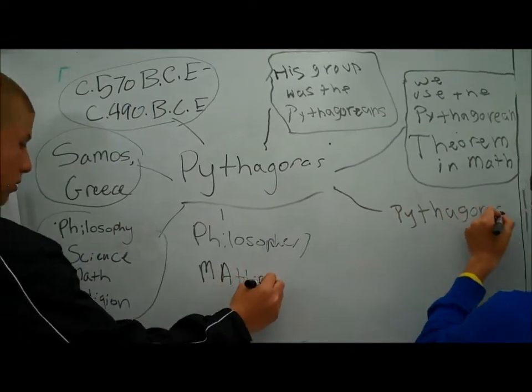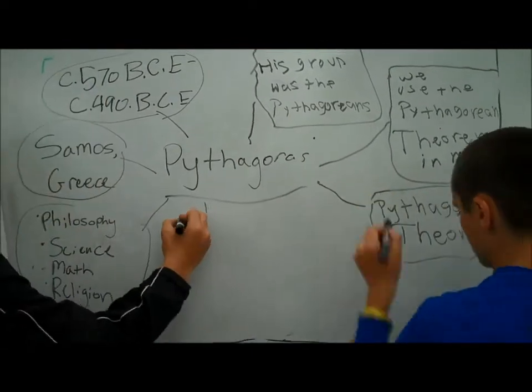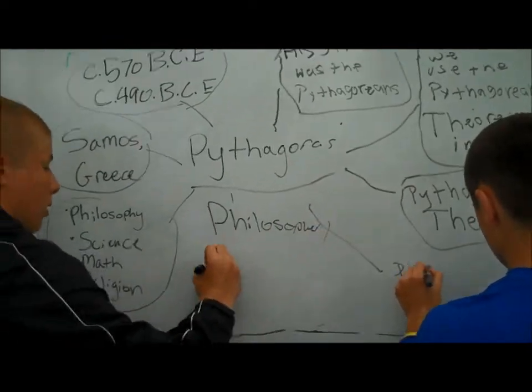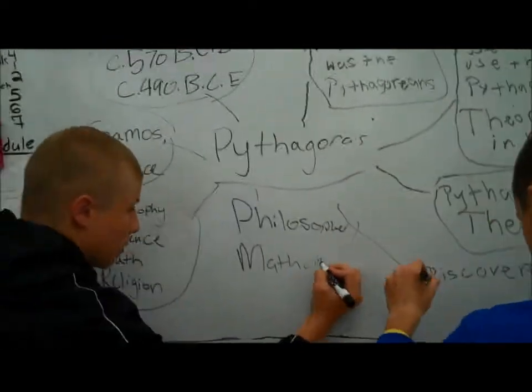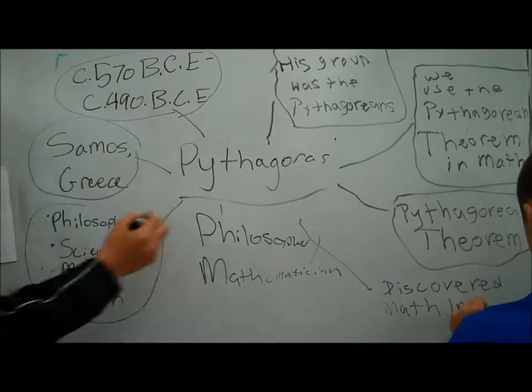His most famous work is Pythagorean Theorem, where he discovered that in right triangles, a squared plus b squared equals c squared. Pythagoras affected our lives today because we still use his theorem to help figure out sides of right triangles.